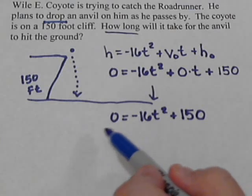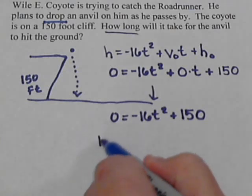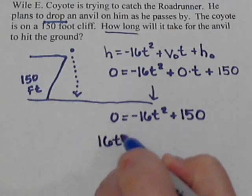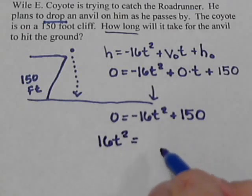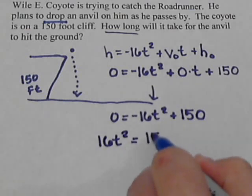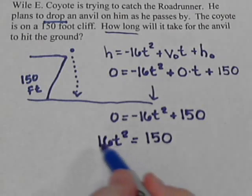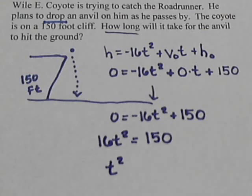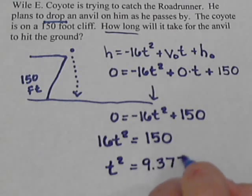When we move it over, make it positive. And then we get the negatives out of the problem. So I move that over. It becomes positive 16 T squared equals 150. And we're going to divide both sides by 16. So 150 divided by 16, so T squared gives us 9.375.